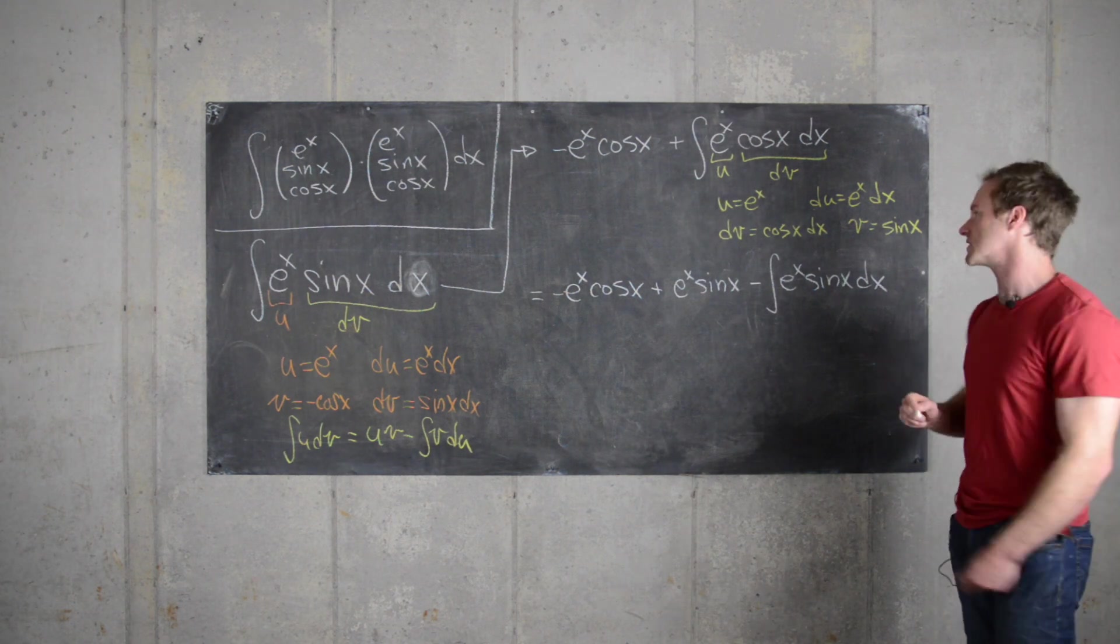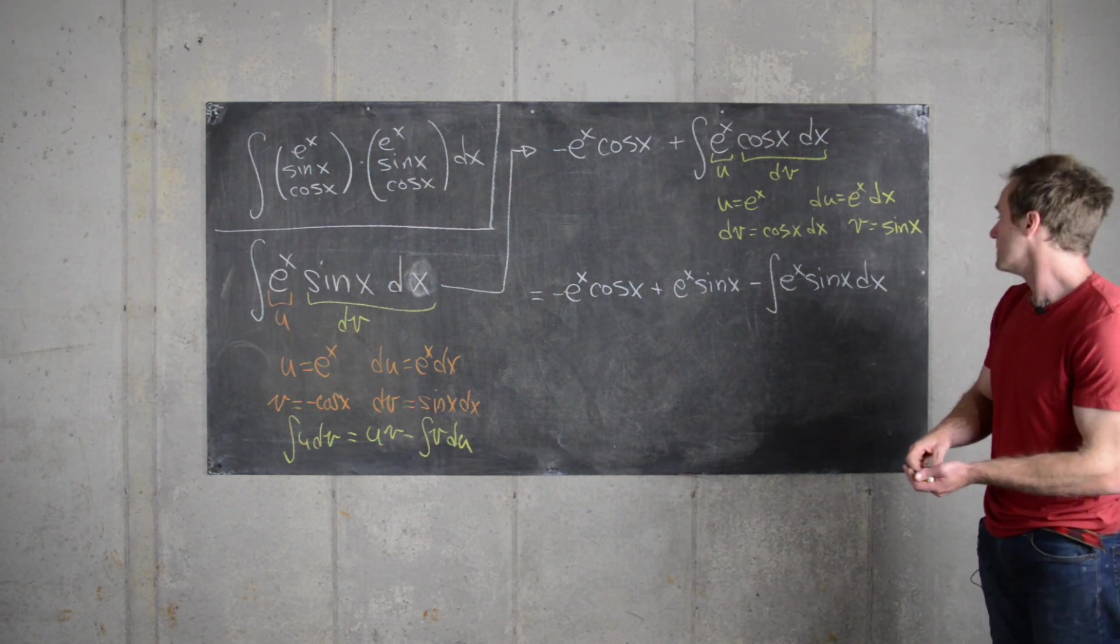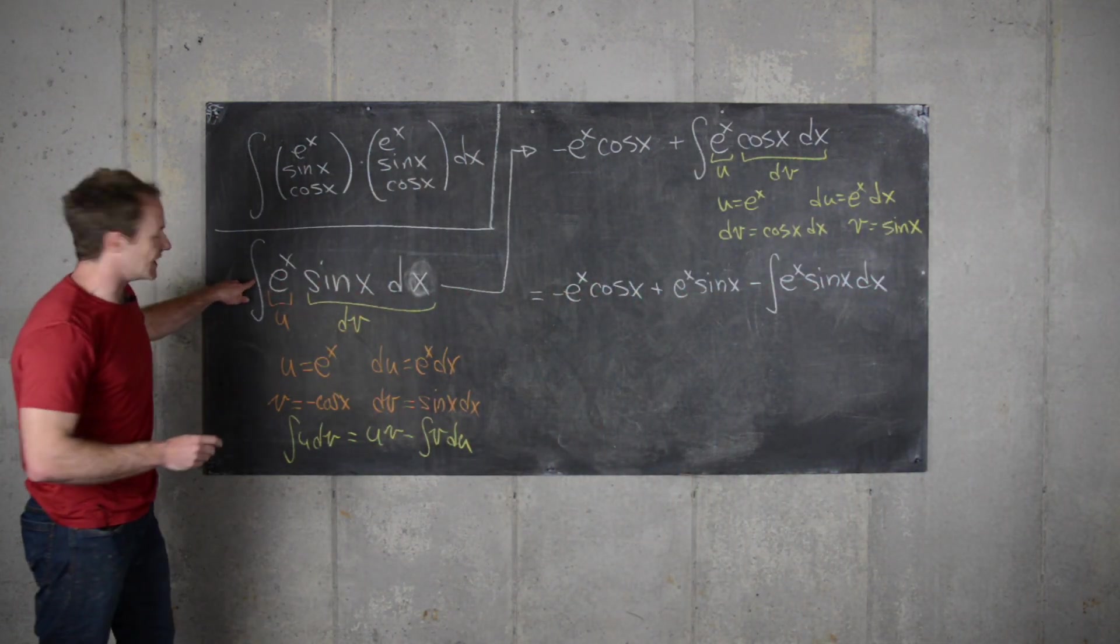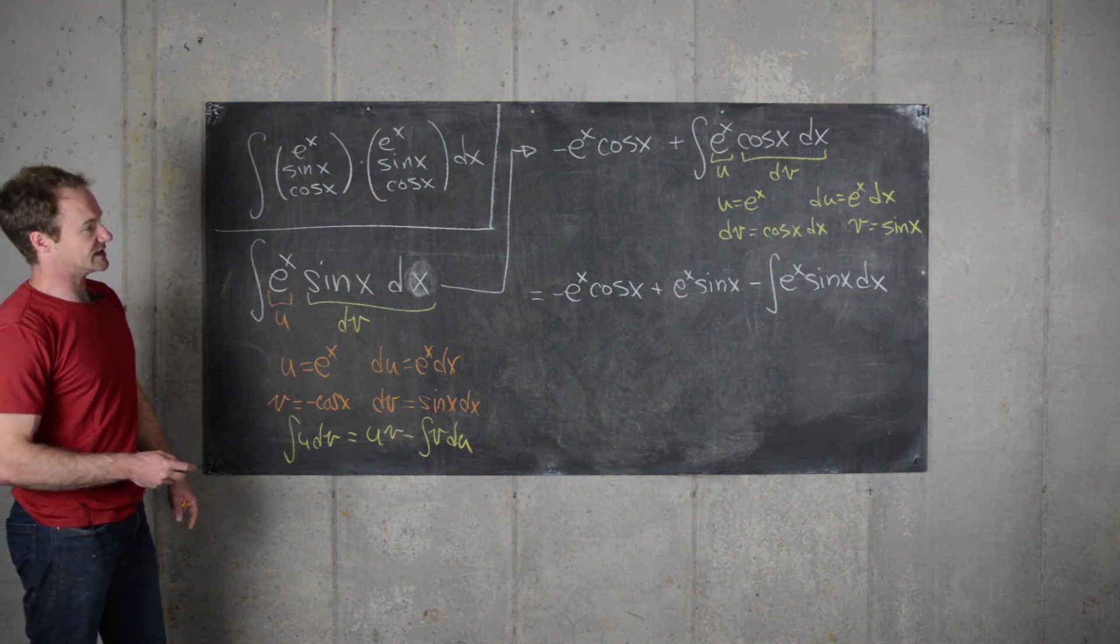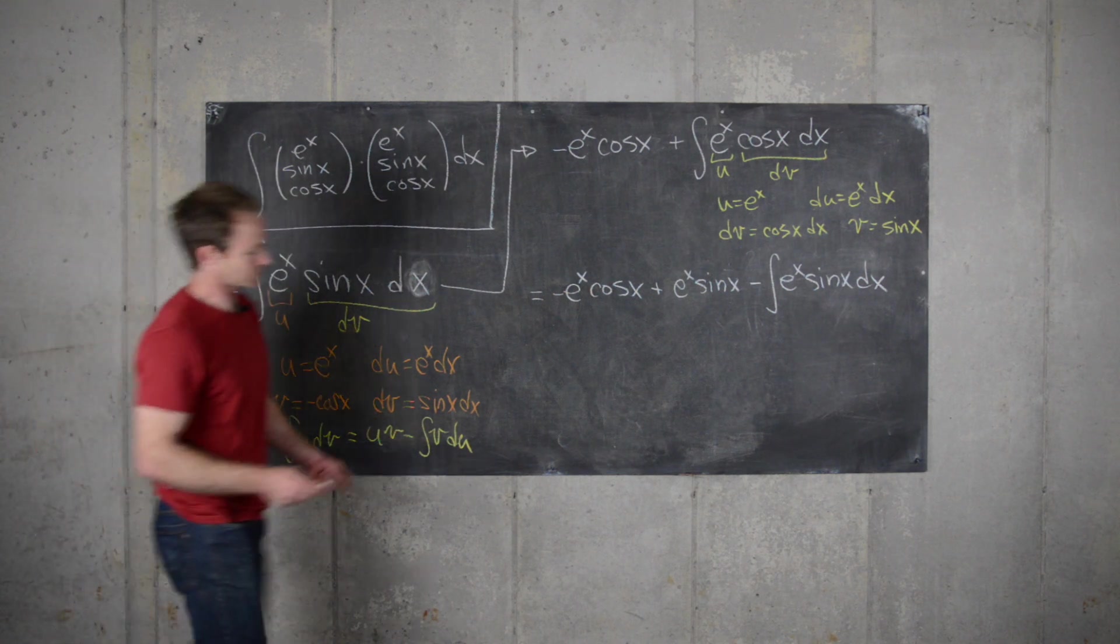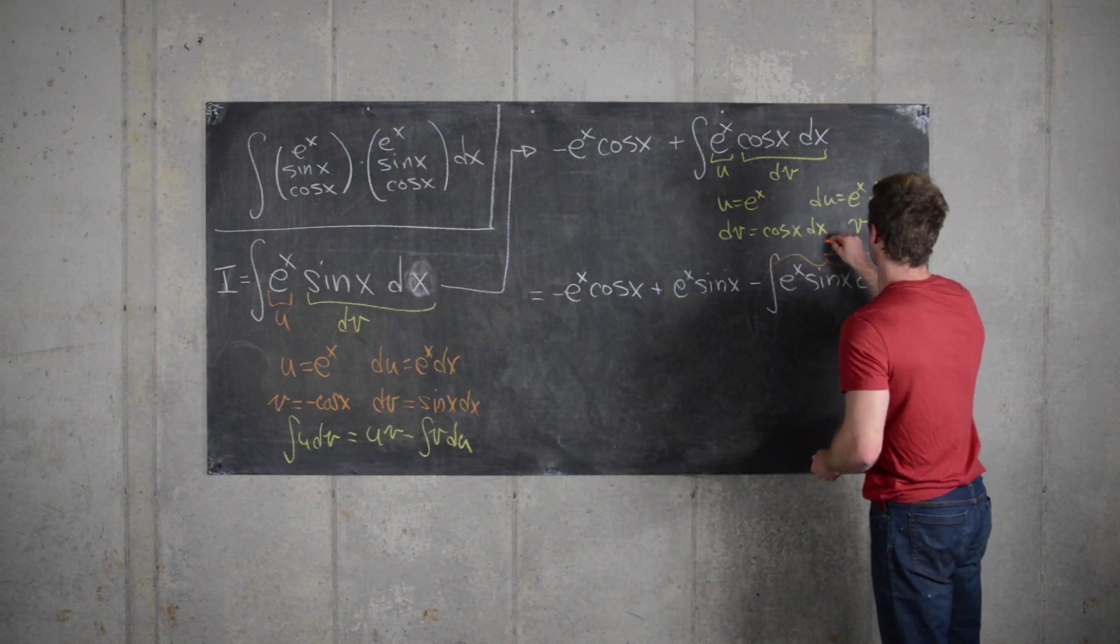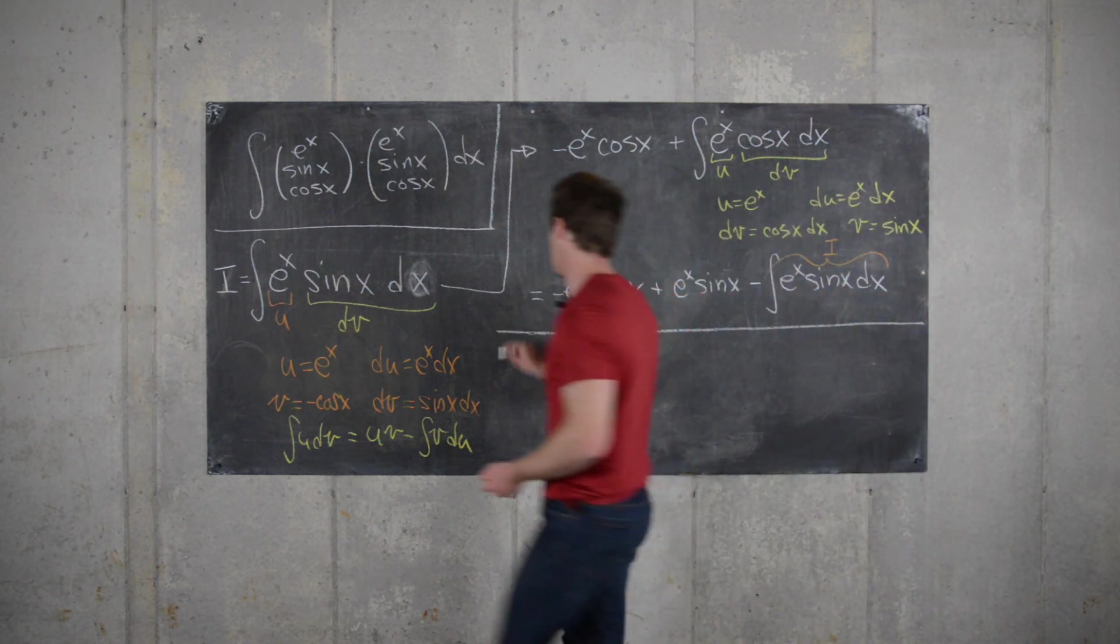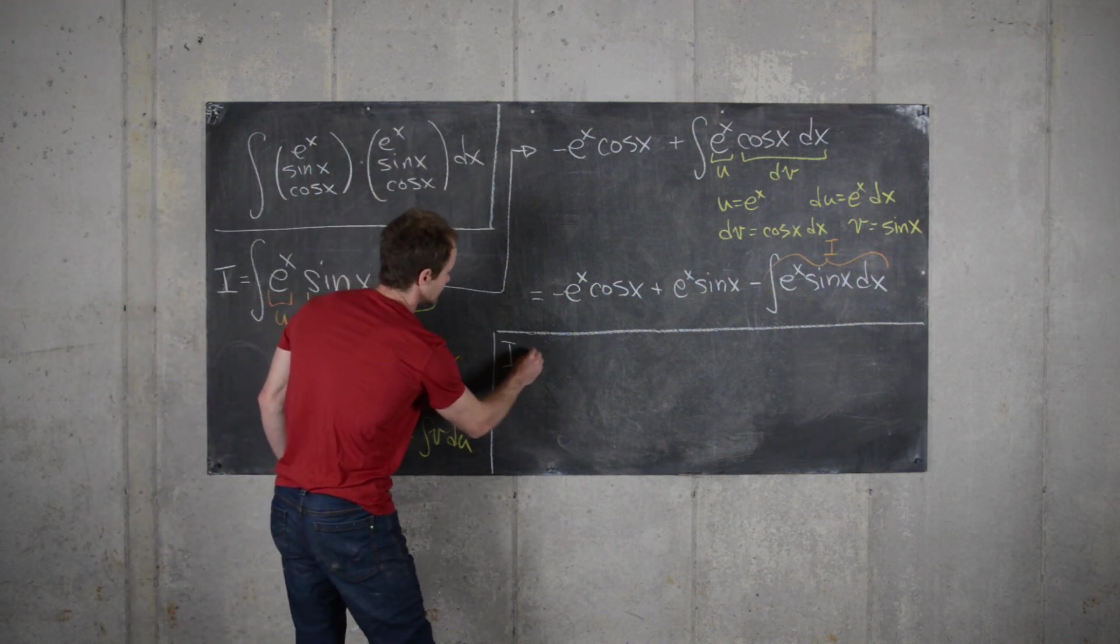And for a second, it looks like we've just gone in a circle and we haven't gotten anywhere because we need to do integration by parts again. But then, if you notice that we started with the integral of e to the x sine x and we ended up with something in terms of the integral of e to the x sine x. So if we set this equal to i, notice that here we have found the integral i again. And so that sets up algebraic equation i equals.